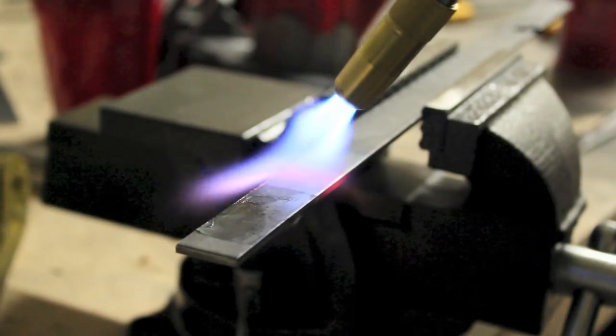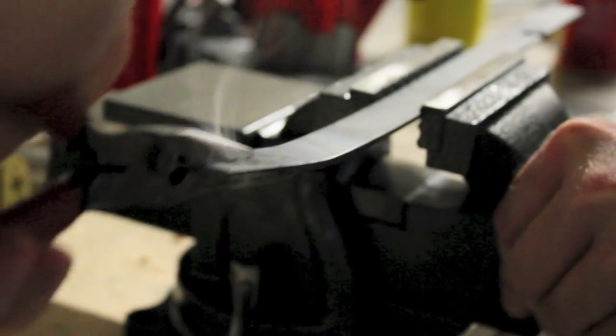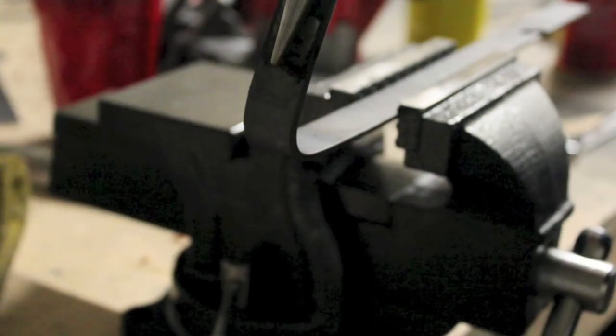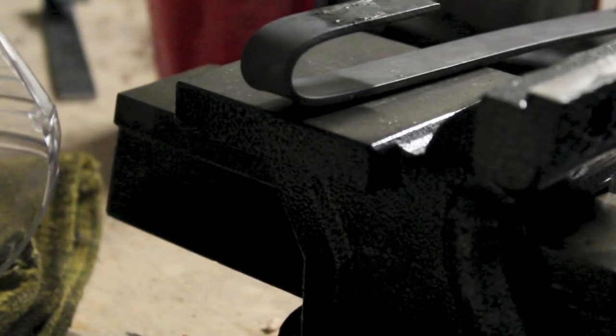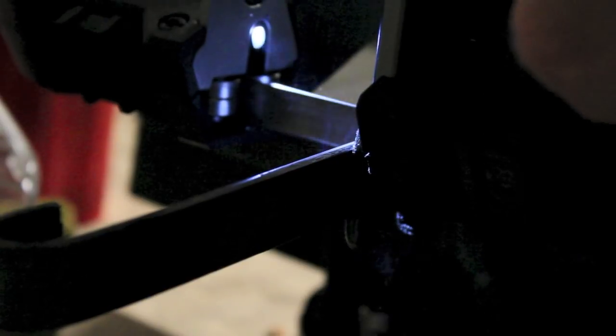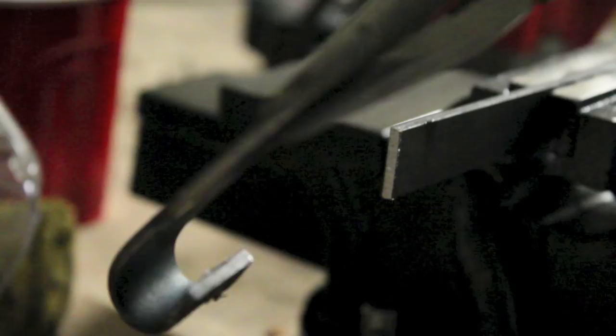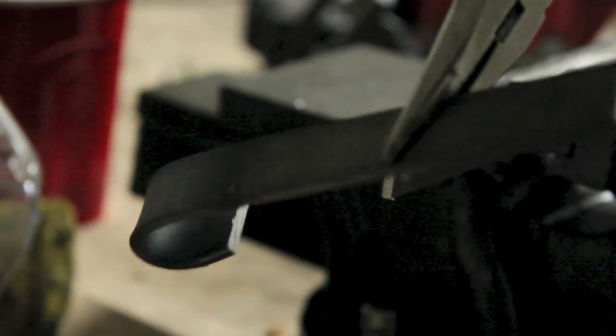This one right here is basically just like a little mini crowbar. So I took a one-inch steel flat bar and used map gas to heat it up and bend it. Make sure if you do this that you actually use map gas and not propane. Propane is not going to get hot enough to do something like this. So make sure you get the yellow bottle when you go to the store.